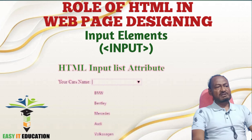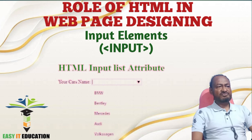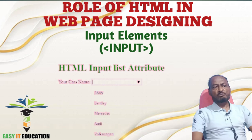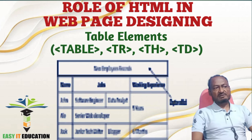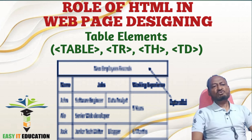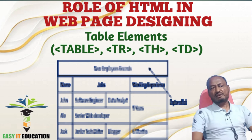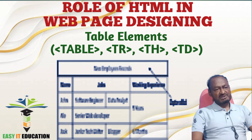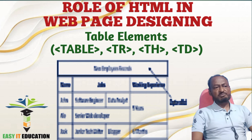Number 14: Input Elements. They are used to create various types of form fields such as text fields, checkboxes, radio buttons, drop-down menus, and more. Number 15: Table Elements — Table, tr, th, and td. They are used to create structured tabular data. The table element defines the table, tr represents a table row, th defines table headers, and td represents table cells.